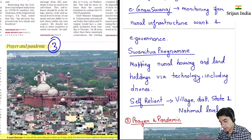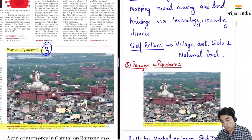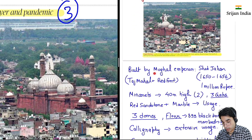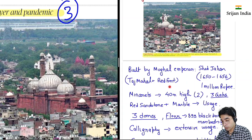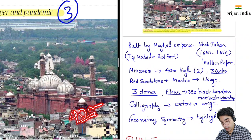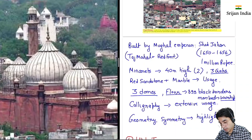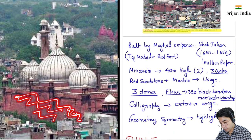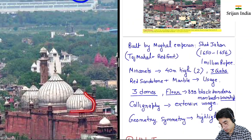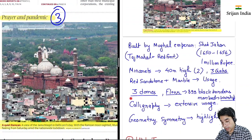Then yeh jo third news hai, yeh prayer and pandemic ke baare mein hai — Ramzan start ho gaya hai. Aaj hum baat karenge Jama Masjid ki. Jama Masjid jo hai, yeh banaya gaya tha Mughal emperor Shah Jahan ne, 1650 se 1656 ke beech mein. Pehle Shah Jahan ne Taj Mahal bhi banvaya hai aur Red Fort bhi banvaya hai. Ismein do badi minarets hai — inki height 40 meter hai. Yahan pe teen gate hai. Yeh bana hai red sandstone se — Red Fort bhi isse se bana hai. Marble ka bhi yahan usage hua hai. Floor pe around 899 black borders marked hai. Teen domes hai — these are called domes. Calligraphy bahut achhe se hui hai — calligraphy matlab beautiful writing se likhna.